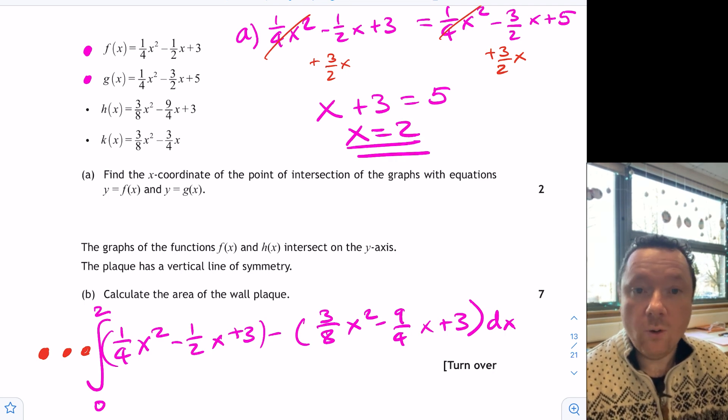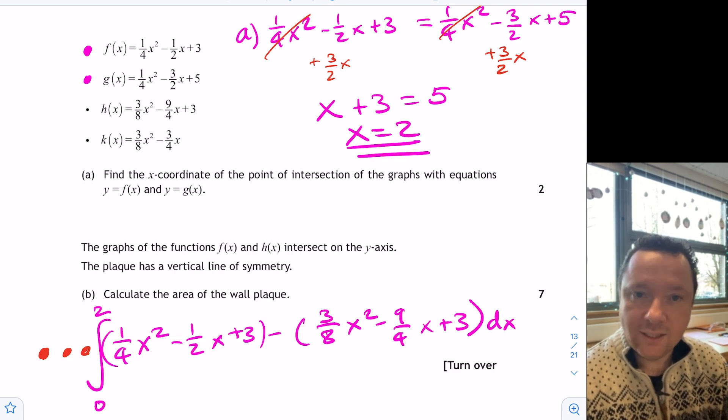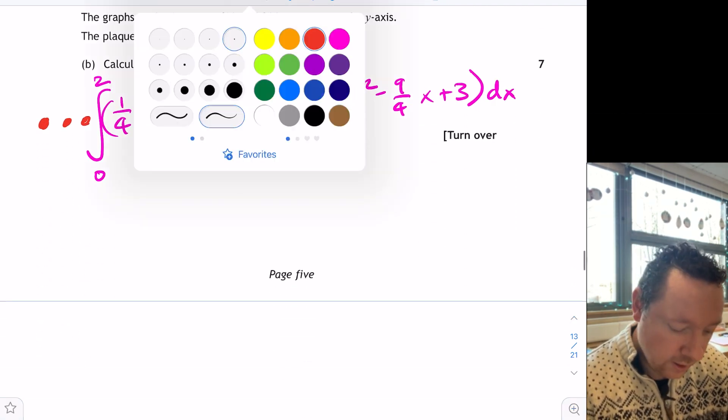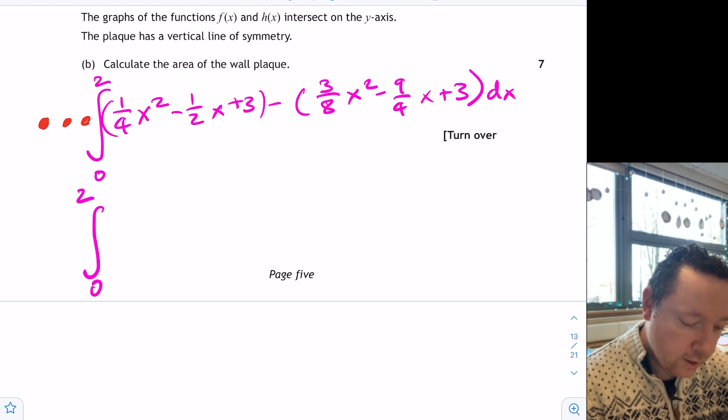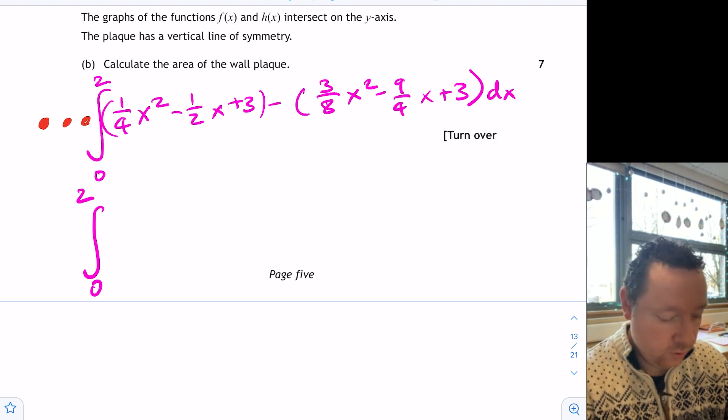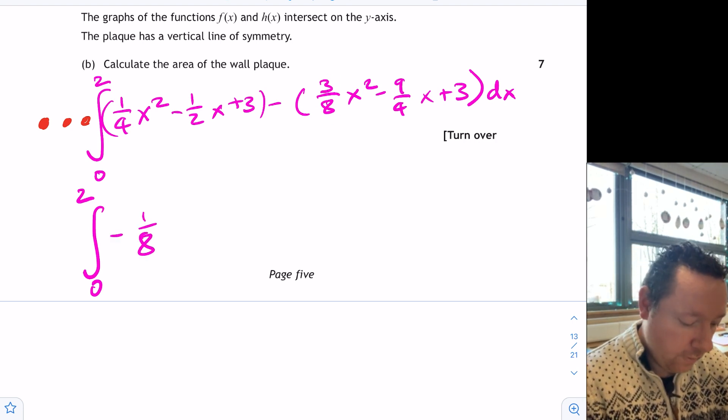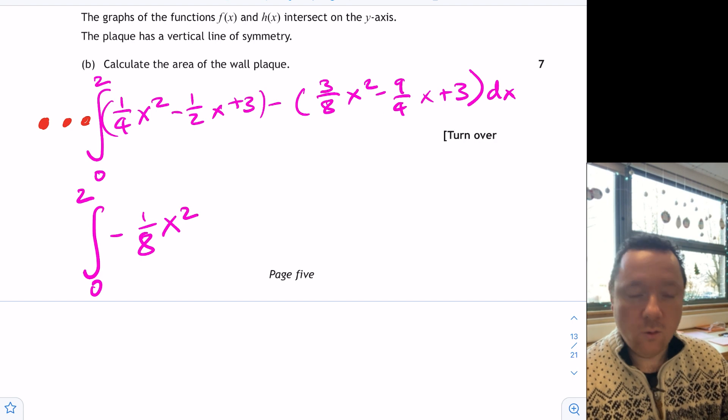And then we need to integrate it, and you actually only get one further mark for the integration. So all the tidying up you're going to do now you're not going to get any marks for, but you still need to do it to be able to integrate. So let's tidy this up. So that gives us the integral between zero and two. You've got a quarter x squared minus three eighths x squared. So a quarter is two eighths. So being very careful, you've got two eighths minus three eighths. You've got minus an eighth of x squared.